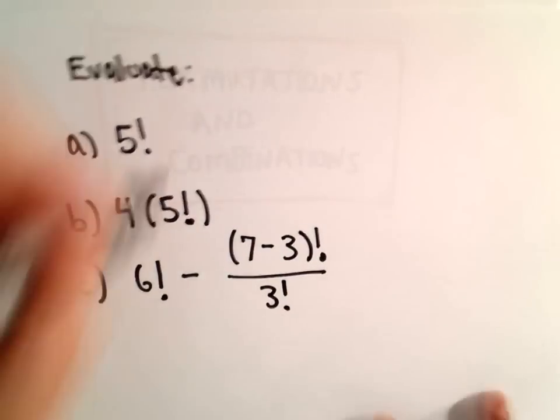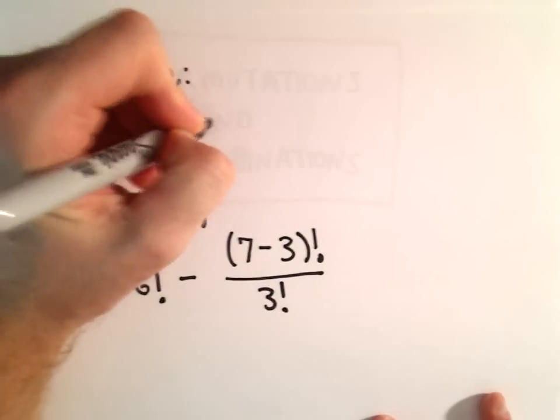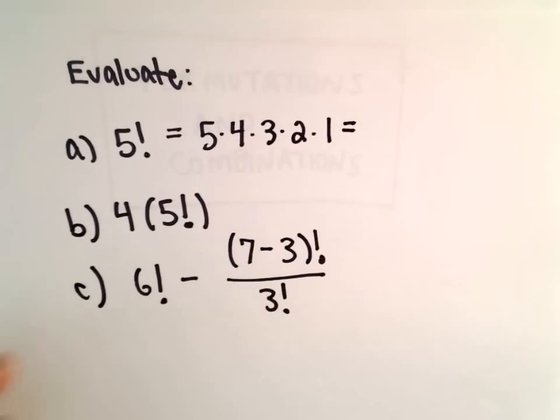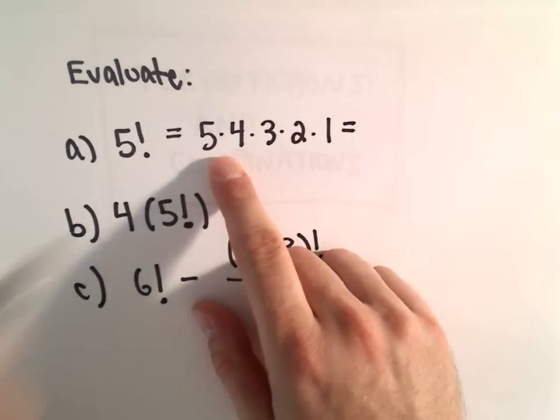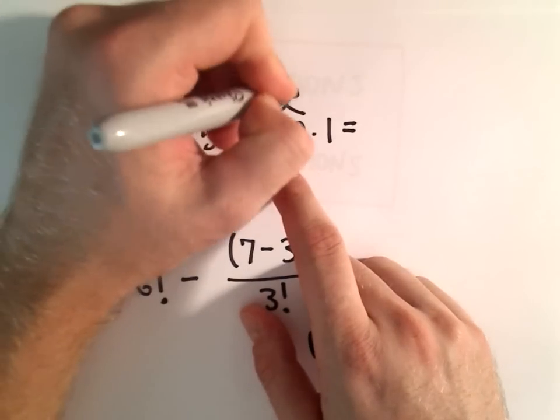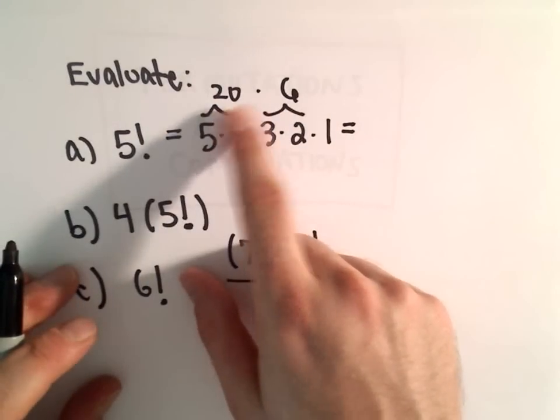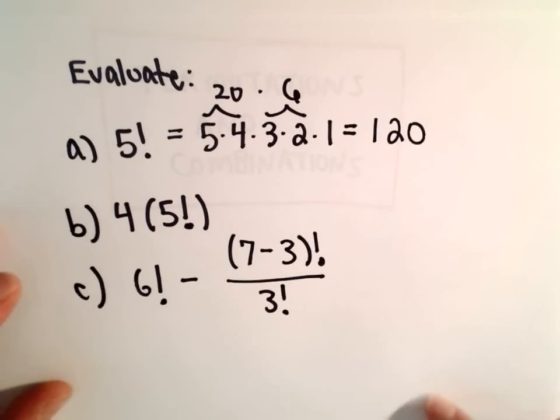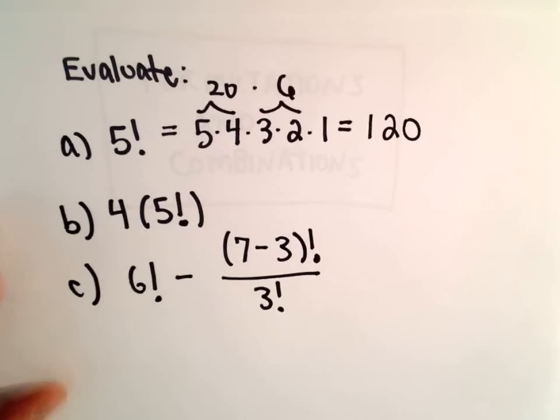Well, 5 factorial, that's just shorthand for 5 times 4 times 3 times 2 times 1. So, let's see, 5 times 4 is going to be 20, 3 times 2 is going to be 6. So, if we multiply 20 times 6, we get 120. So, 5 factorial is equal to 120.